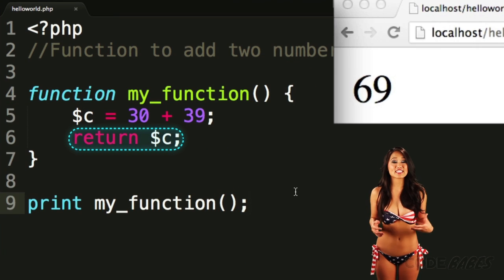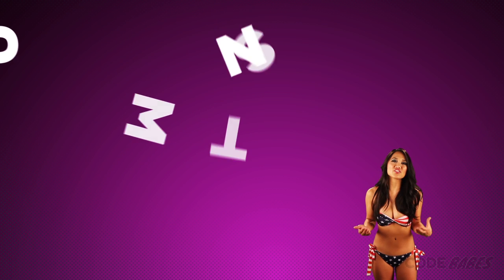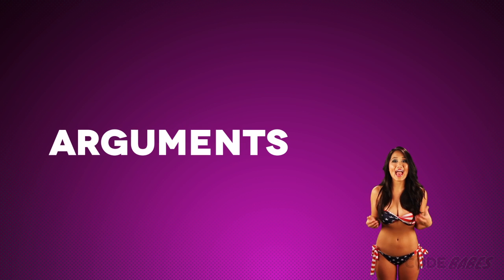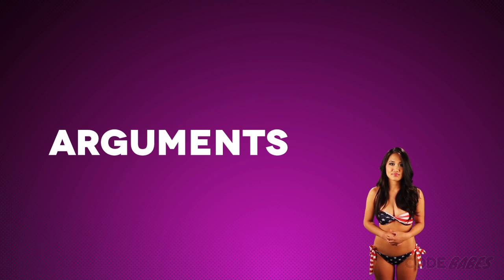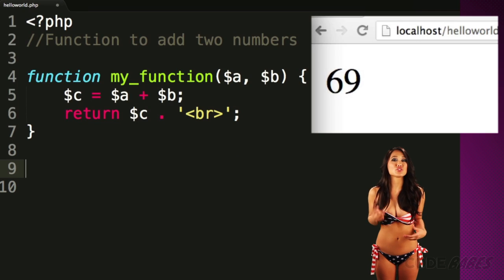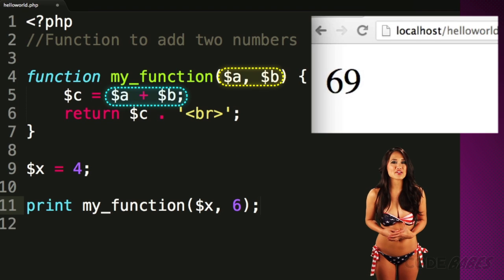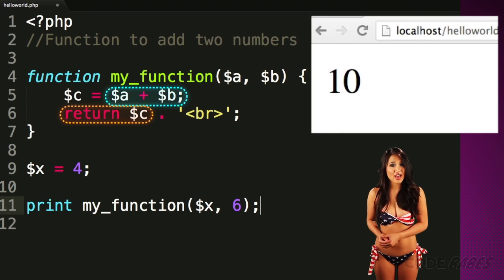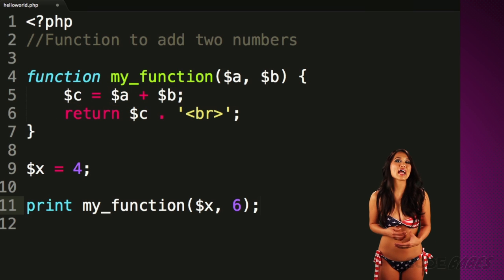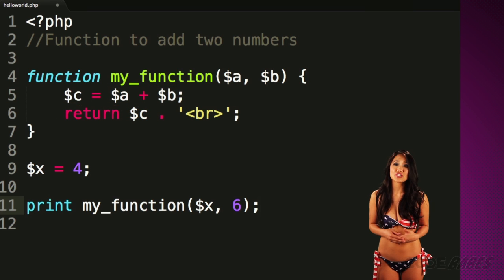This function is not very interesting. Let's add some arguments. Arguments are variables that get added when you call a function. This function accepts two arguments, a and b, and then it adds them together and returns the value. Our function can now be reused to add any two numbers.